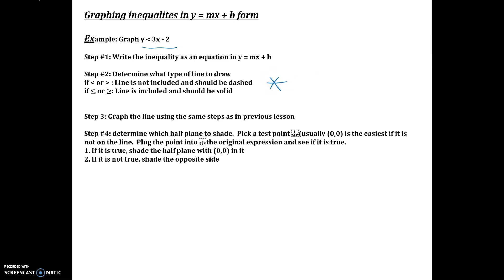Then graph the line using the steps from the previous lesson — plot the y-intercept and use the slope to find the next point. For step four, determine which half-plane to shade: pick a test point, usually (0, 0), as long as it's not on the line. Plug it into the inequality — if it's true, shade that side; if it's not true, shade the opposite side.